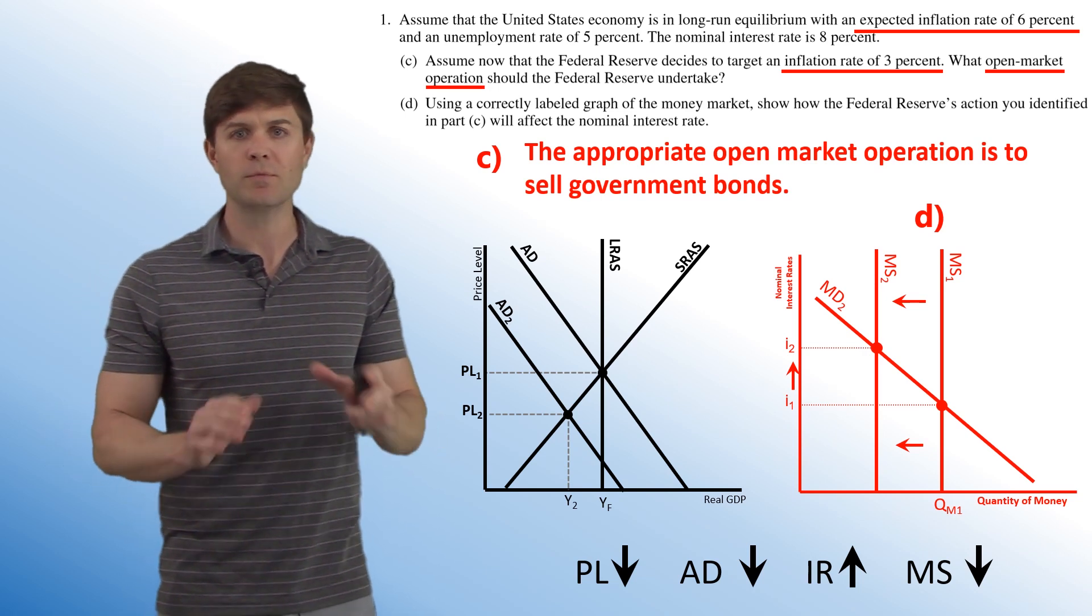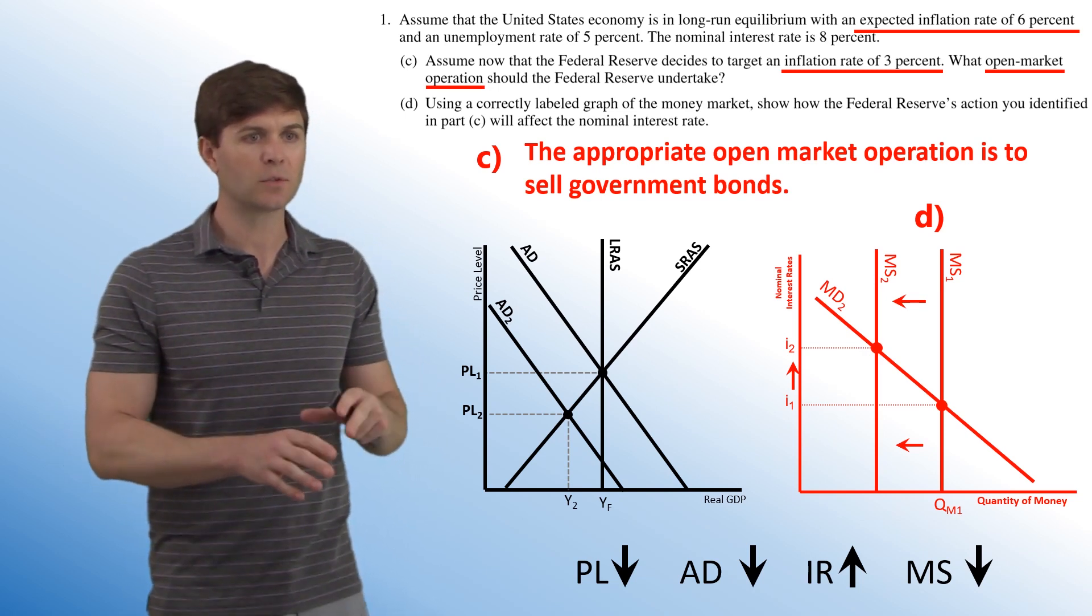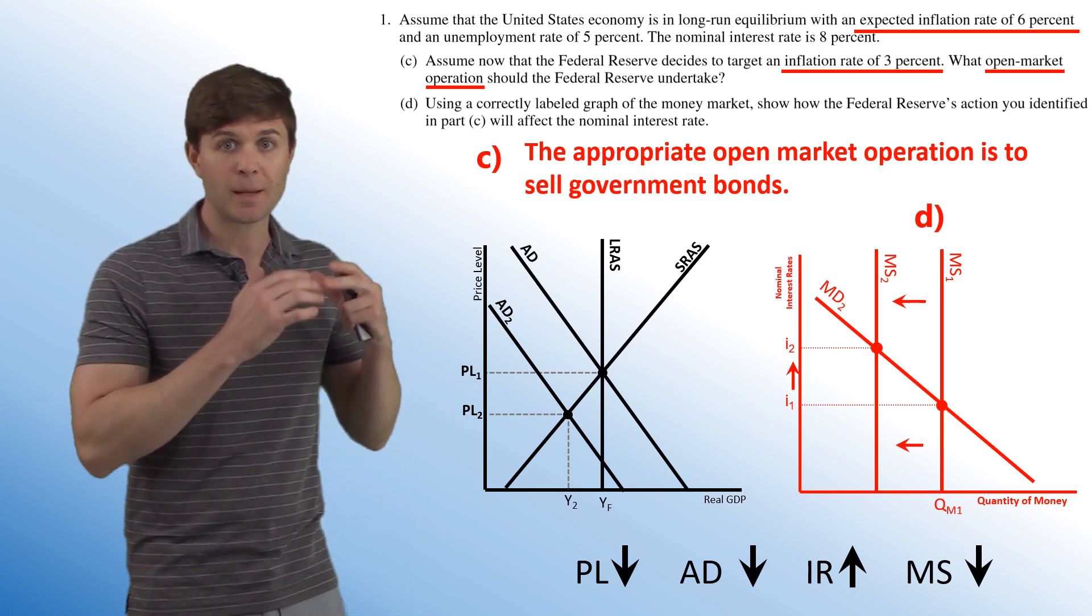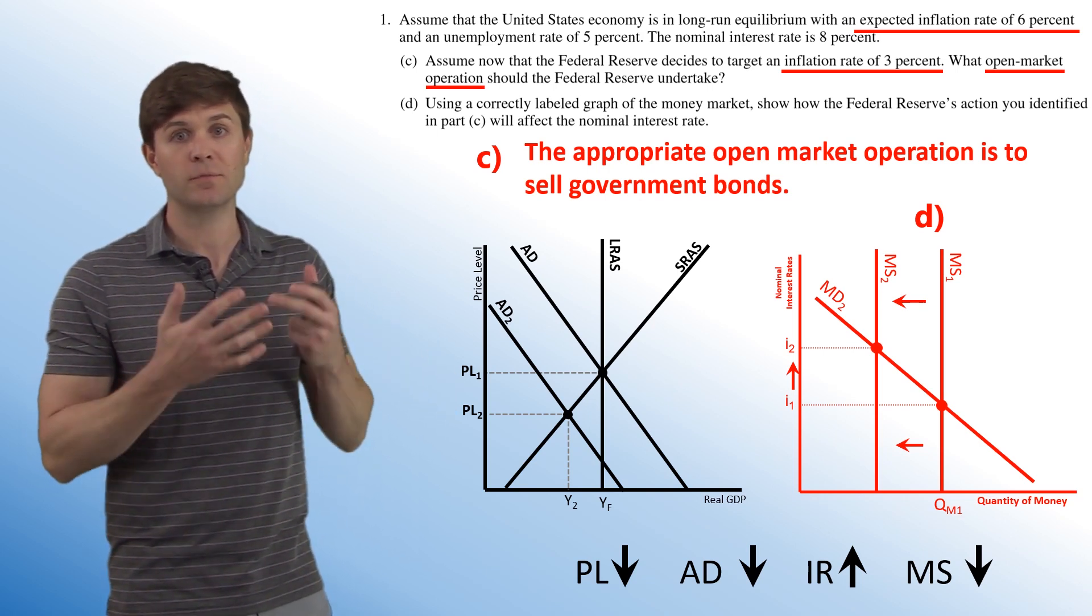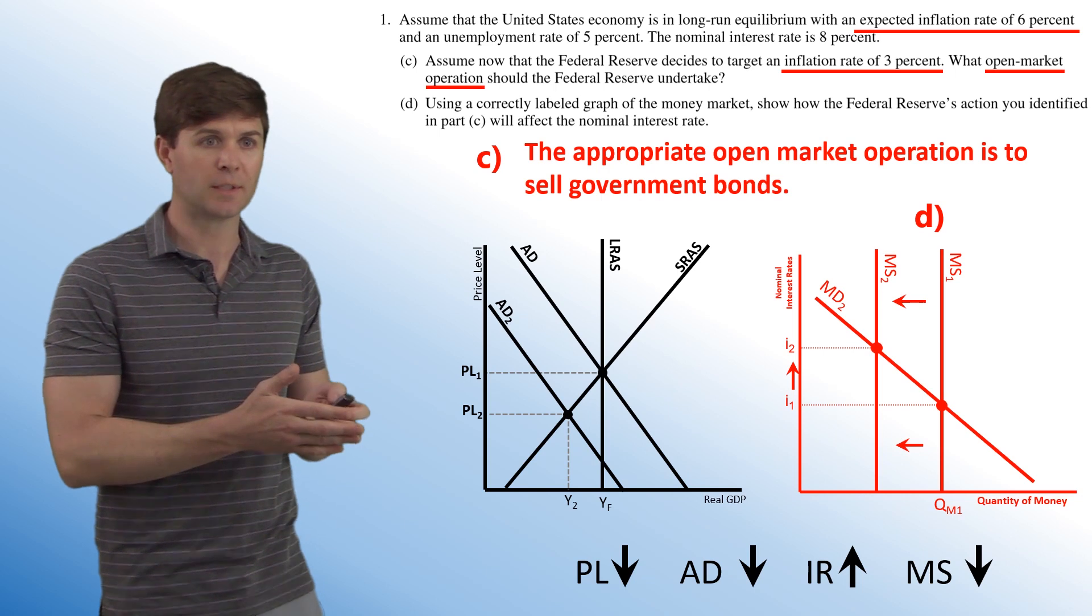So that's it for answer C right there. Answer D, we've already done. We've got our money supply, our money demand curves, properly labeled axes, and we have our leftward shifting money supply curve that shows that open market operation that they took.